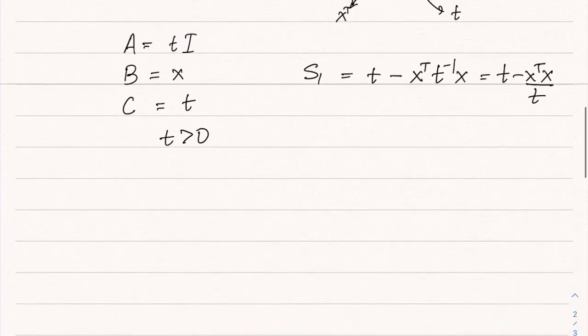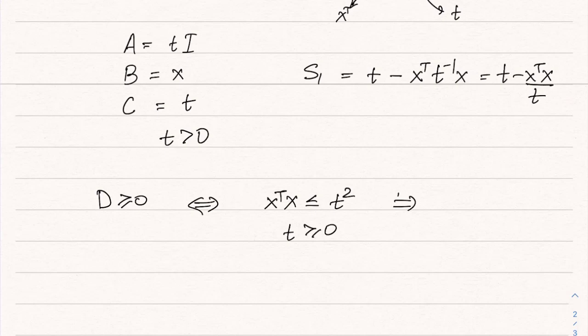And then the result says that D positive semi-definite is equivalent to saying that S1 being positive semi-definite is the same as saying that x transpose x is less than or equal to t squared and t is greater than or equal to 0. So t is greater than 0 is already given, which is equivalent to saying that the norm of x is less than or equal to t and t greater than equal to 0, which is the implicit constraint.